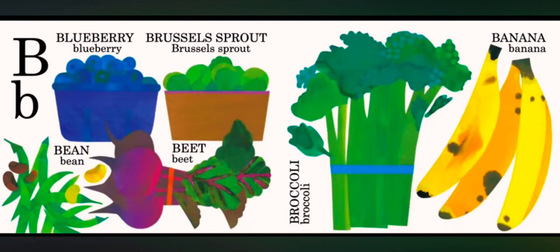B is for blueberry. B is for bean. B is for Brussels sprout. B is for beet. B is for broccoli. B is for banana.